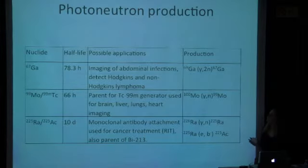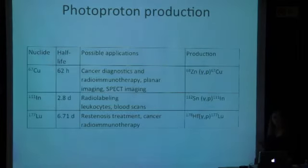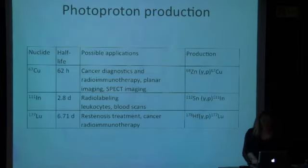In general, photoneutron production gives you pretty high yield because the cross-section for gamma-N in general is a little bit higher than gamma-P. Here are just some examples of different isotopes that you can produce using gamma-N or gamma-2N reactions. And you can see that they might be used for treating different diseases and for imaging as well. Using photoproton reaction, knocking out a proton, some examples you can see here as well. Here is our copper-67. You can make indium, lutetium. And again, it can be used for different purposes.